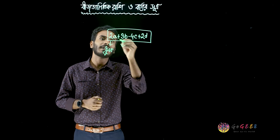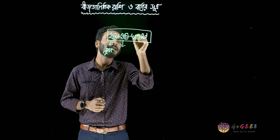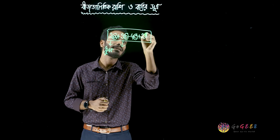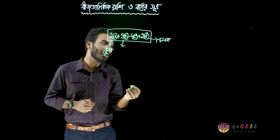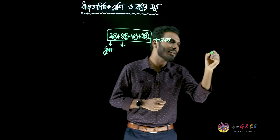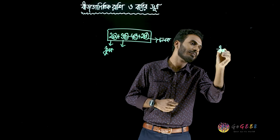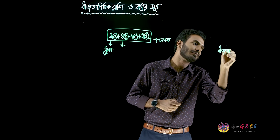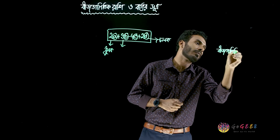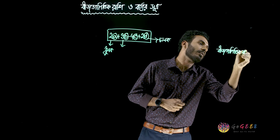We will talk about 1b minus 4c plus 3c. We will talk about 1b minus 4c plus 2c.